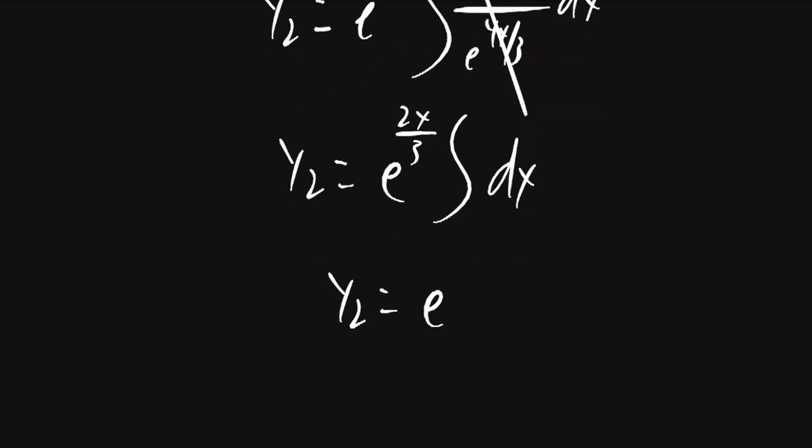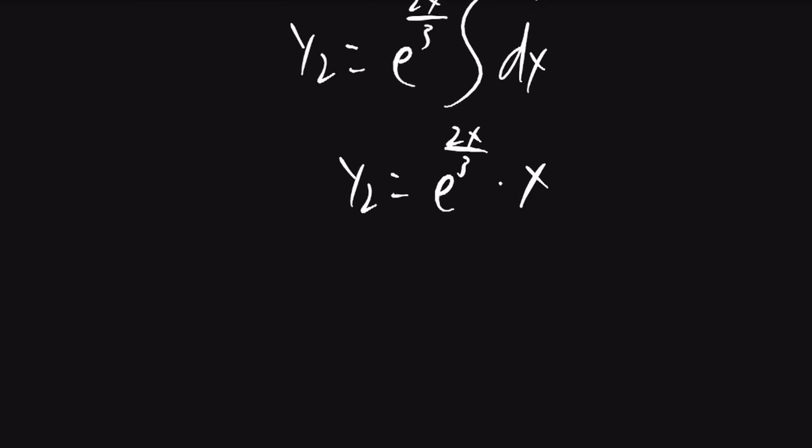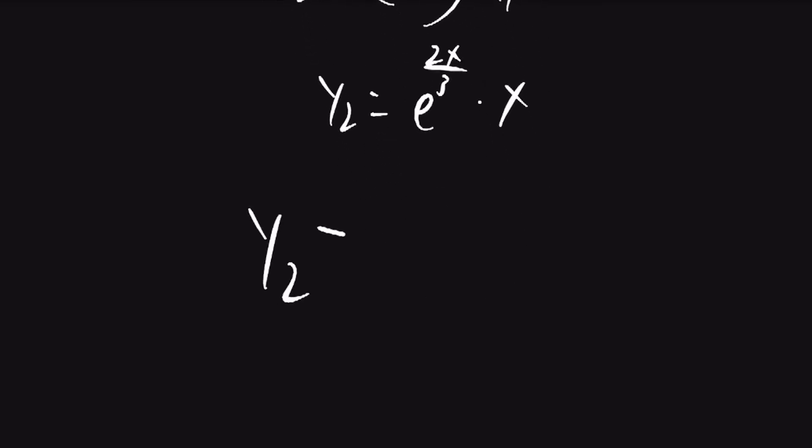So y2 is going to be equal to e to the 2x over 3 times x. I'll put the x out in front. So y2 will be equal to x e to the 2x over 3. And that is our final answer.